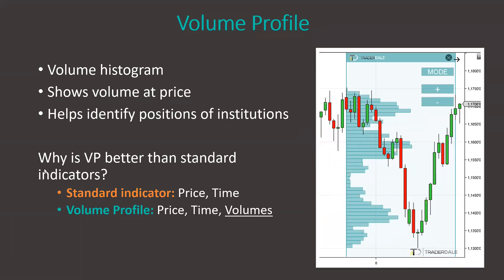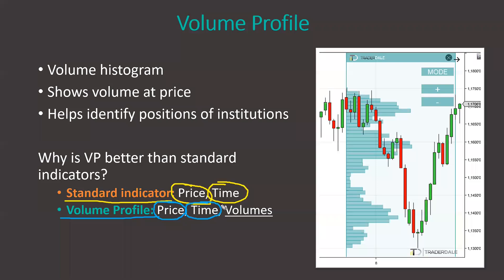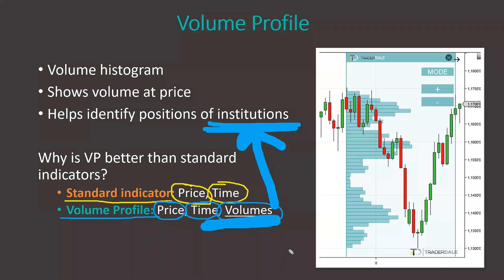A lot of people ask me, why is volume profile better than standard indicators? There's one significant difference. Standard indicators use only two variables in their calculation: price and time. Basically, they tell you what the price was doing at a certain point in time, and I don't really think there's any edge in that. But volume profile has three variables: price, time, and volumes. Through volumes, we track the big guys — that's our edge. That's the main difference between the standard indicators the internet is full of, and volume profile.